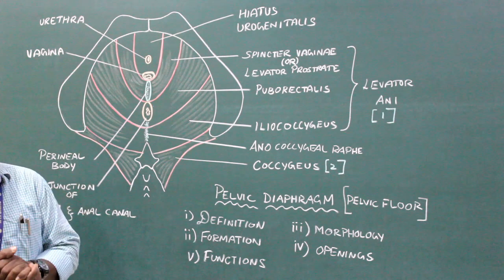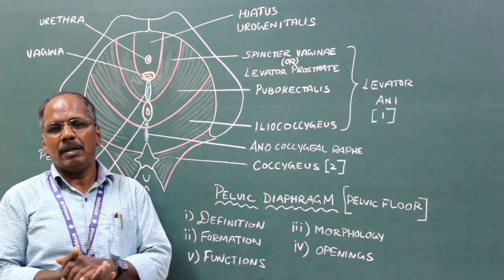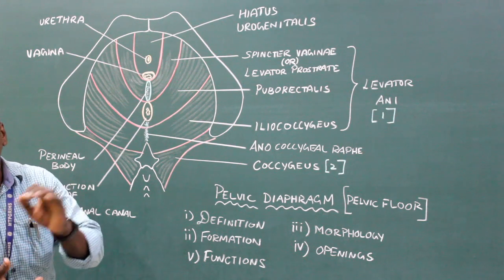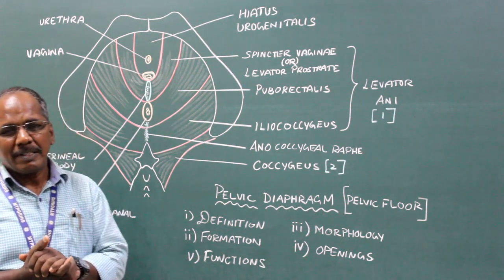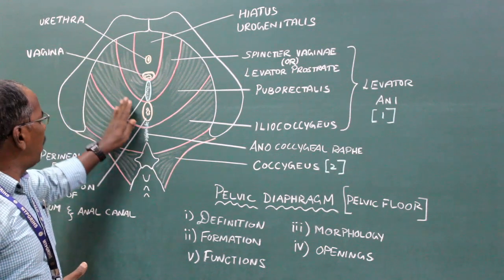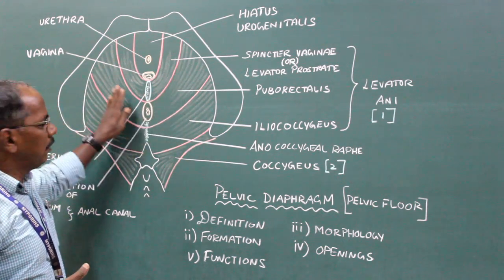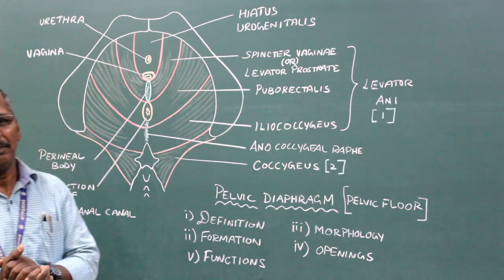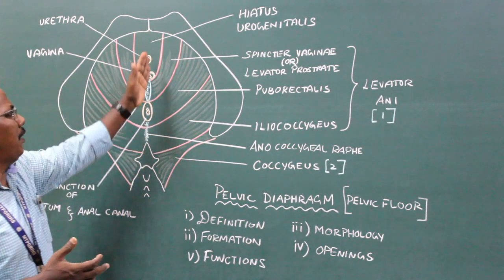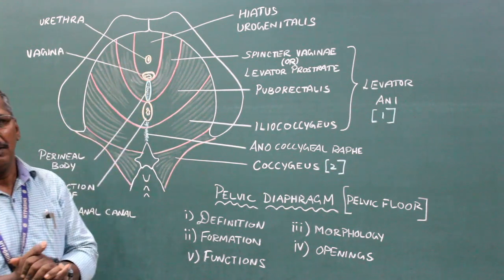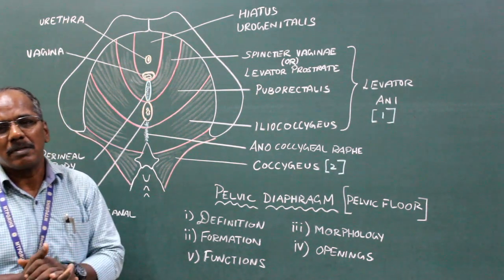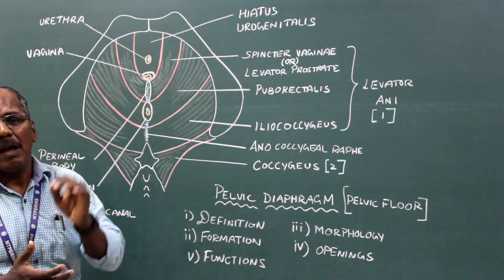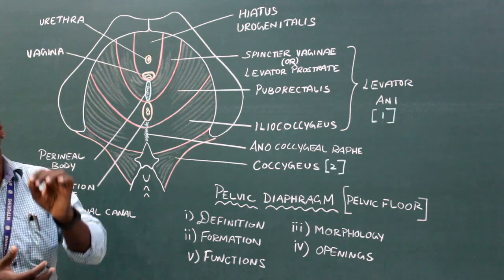Pelvic diaphragm is otherwise known as pelvic floor or inferior wall of the pelvis. It is a musculopartition between the pelvis and the perineum. It is incomplete anteriorly, which allows passage for the urethra in the male and urethra and vagina in the female.